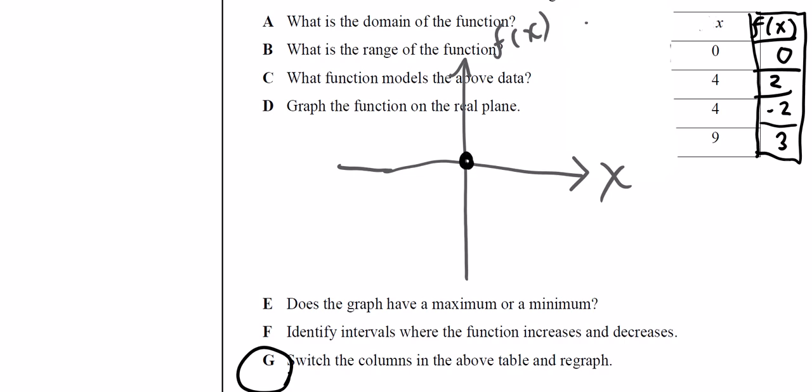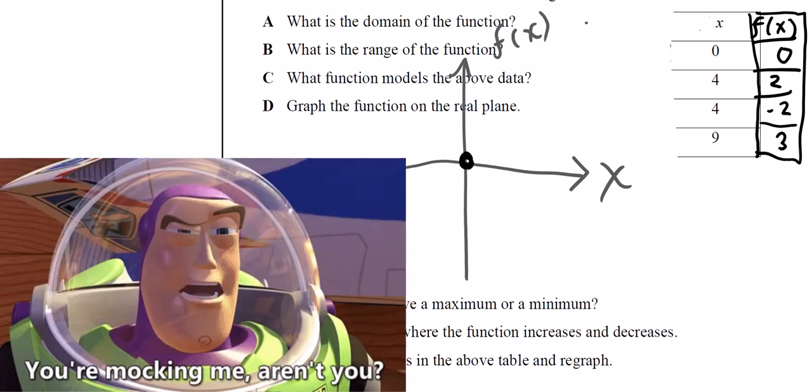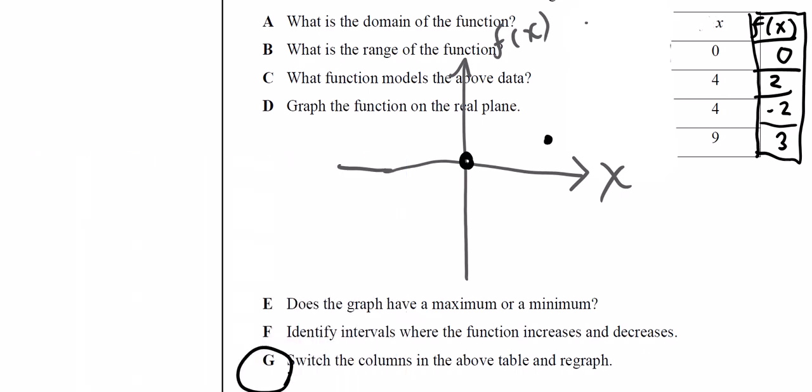We begin with our first point, 0, 0. Next is 4, 2. Then it's 4, negative 2. And then it's 9, 3. And now we connect those.